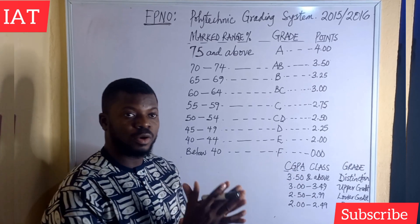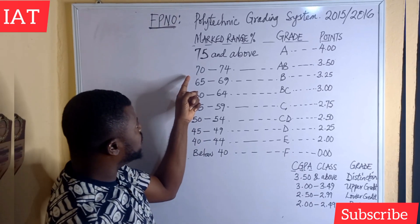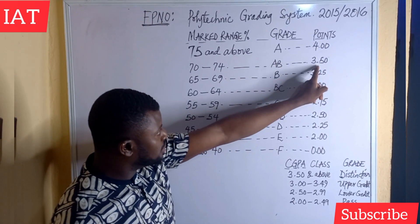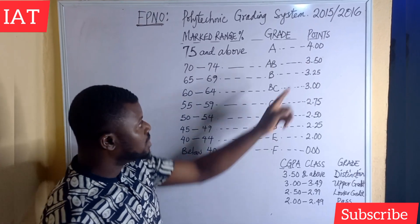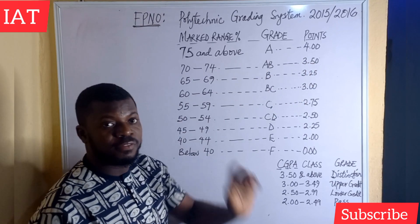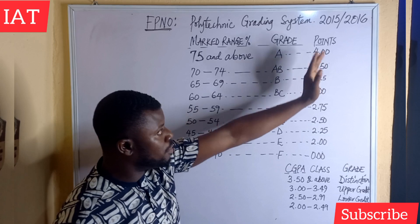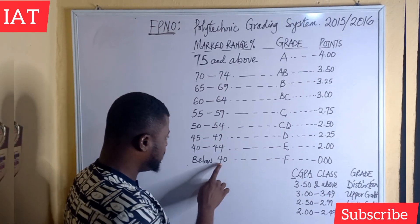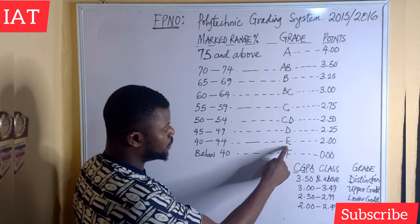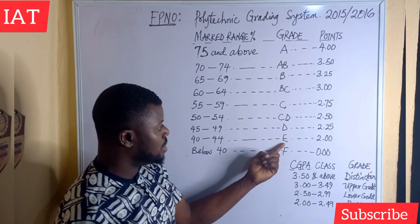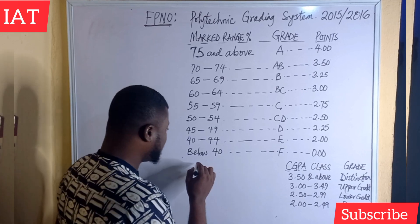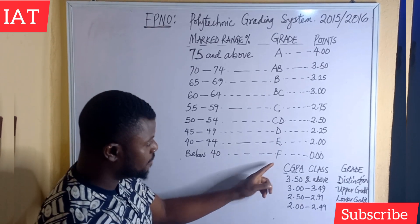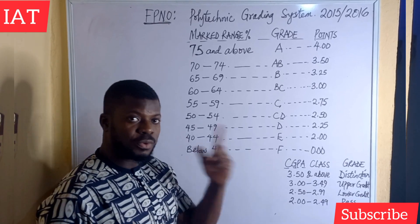If after all your work your score falls within 70 to 74, your grade will be AB, and AB carries a point of 3.50. That process follows through the scale. If you end up with 40 down to 30, your grade is E and it is 2.00. If you have 39, that is F — from 39 down to zero is F, which means you failed the course. When you fail it, you have to register to rewrite it — that's what they call carry over. Before, the carry over threshold in polytechnic was CD; now they have reviewed it and this is the current system.